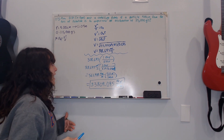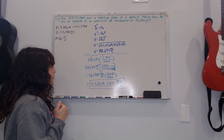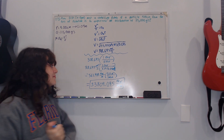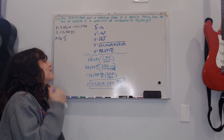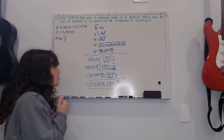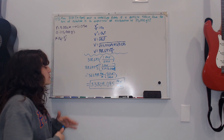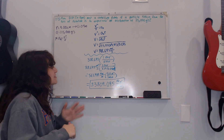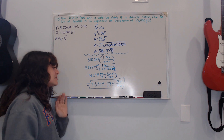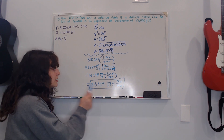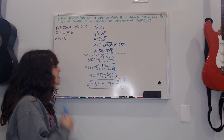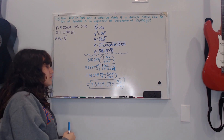The result is still in revolutions per second, so to convert to revolutions per minute I multiply 563.484 revolutions per second by 60 seconds per minute. The seconds cancel out, leaving a final answer of 33,809.095 revolutions per minute.